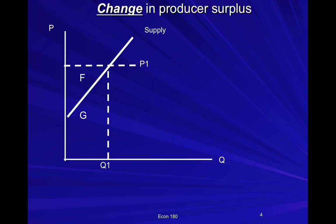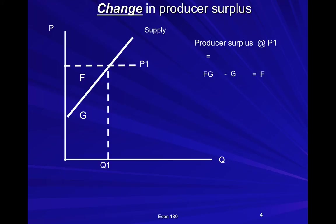We're often going to be concerned with a change in producer surplus. In this example, we've got revenue at price P1 — price times quantity — minus FG, the total variable cost. So the producer surplus is the triangle, or area F, given by that red triangle.